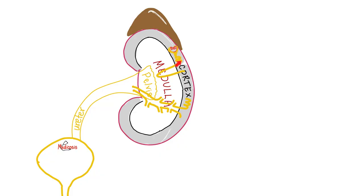The path of urine: Bowman's capsule, proximal convoluted tubule, loop of Henle, distal convoluted tubule, collecting tubules, collecting ducts, minor calyces, major calyces, renal pelvis, the pyelo, then the ureters, urinary bladder, urethra — boom, to the toilet.